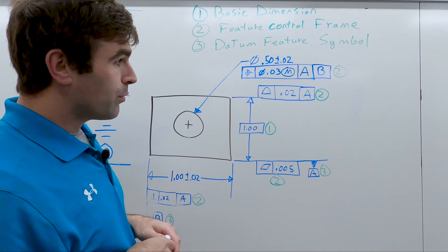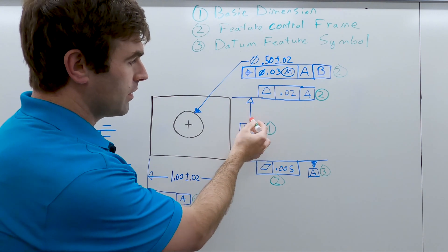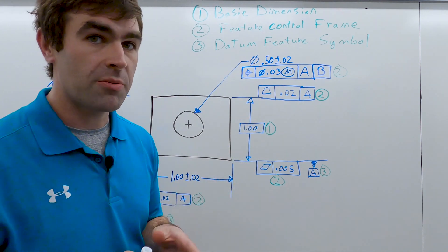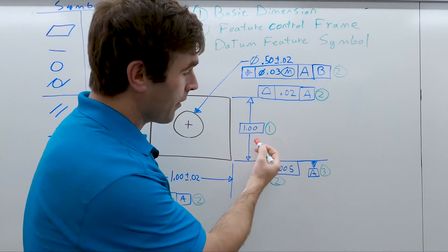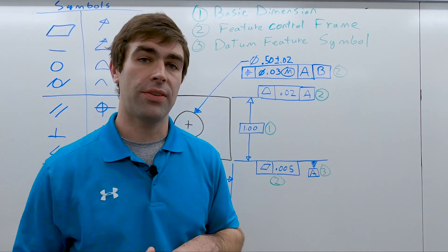The next thing we'll look for are basic dimensions. Basic dimensions are theoretically perfect. If you notice, there's no tolerance attached to a basic dimension.